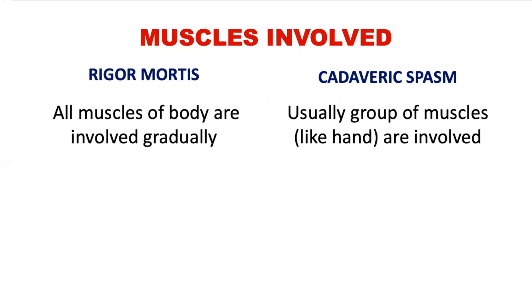Muscles involved: in rigor mortis, all muscles of the body are involved gradually. In cadaveric spasm, usually a group of muscles like the hand are involved.